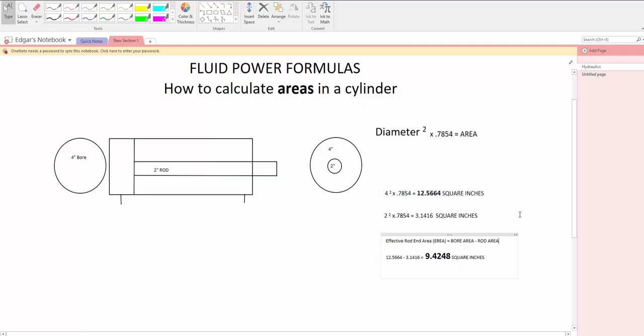These will be the two numbers that you need to work with for calculating the forces in retract and extend of the cylinder. So this will be the bore area right here when the cylinder is going to extend. And this one right here, it will be the area on the rod side where you're going to be applying pressure for the cylinder to retract.